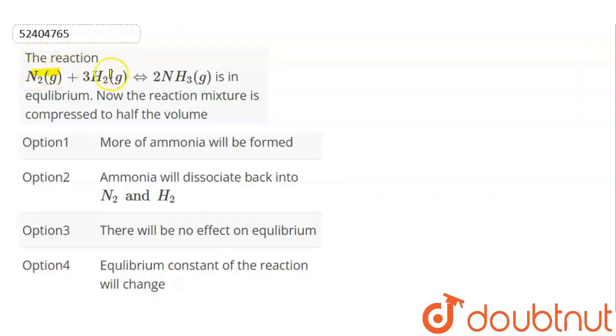The reaction N2 plus 3H2 gives 2NH3 is in equilibrium. Now the reaction mixture is compressed to half the volume. You have options.